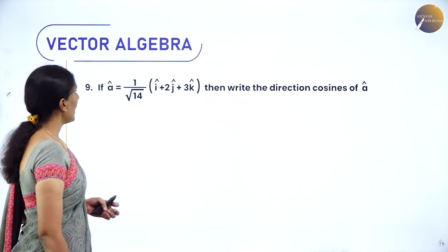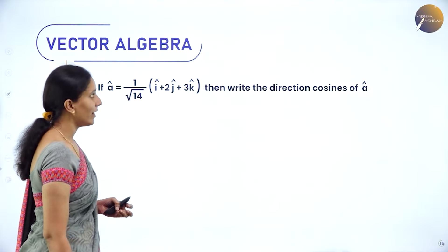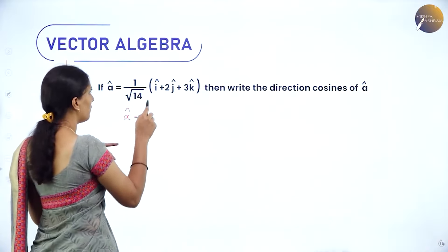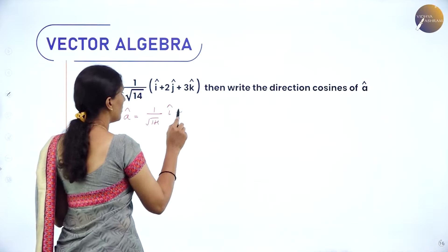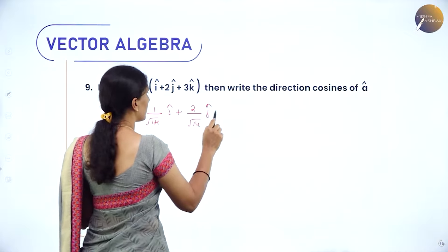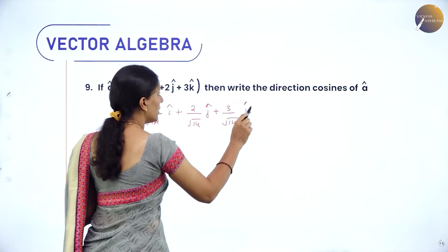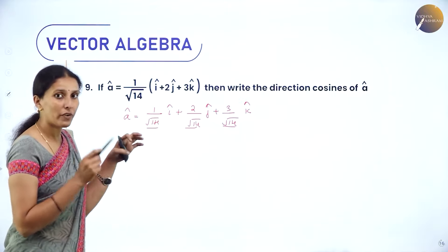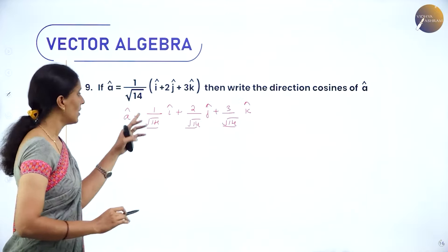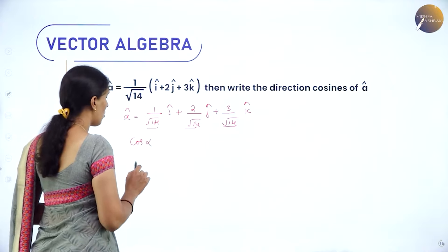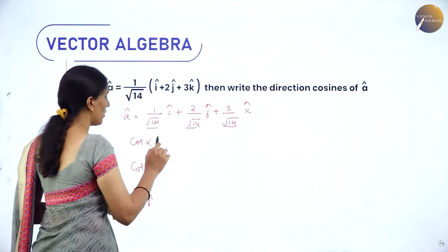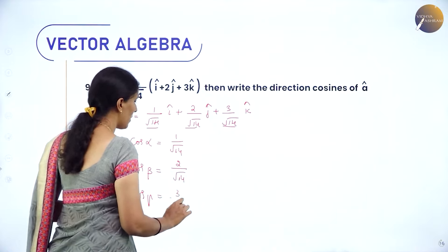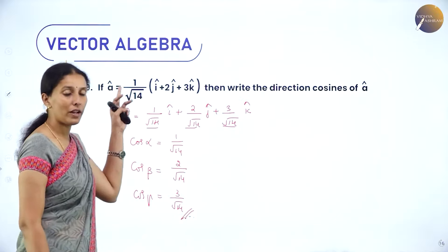Example: If â = (1/√14)(î+2ĵ+3k̂), write the direction cosines of â. Since â is a unit vector, we write it as (1/√14)î + (2/√14)ĵ + (3/√14)k̂. In any unit vector, these coefficients are the direction cosines. Therefore cos α = 1/√14, cos β = 2/√14, and cos γ = 3/√14.